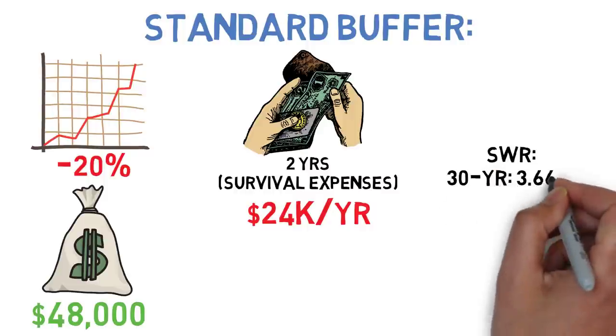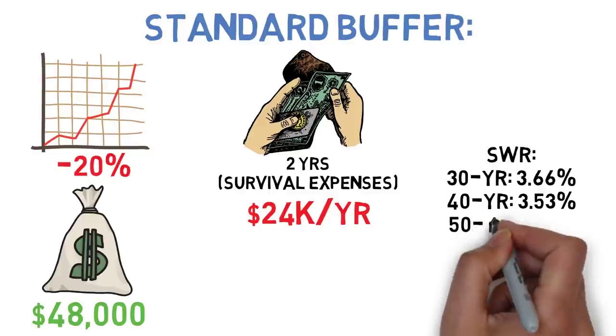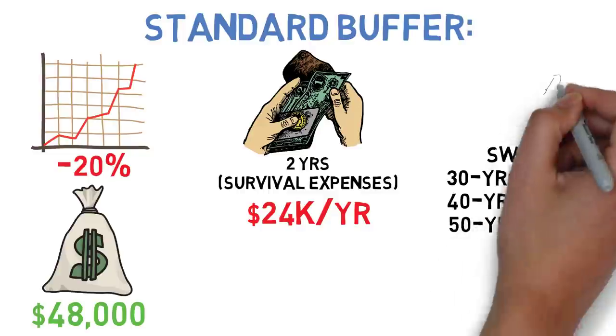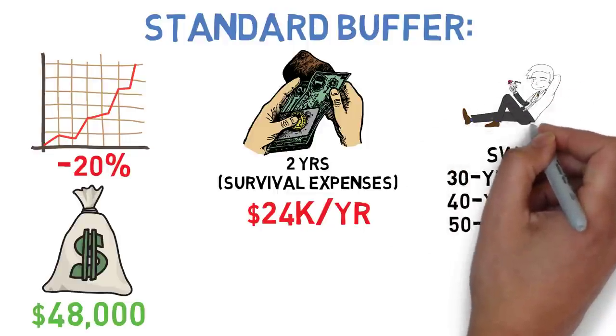In that case our minimum safe withdrawal rates for this strategy would come in at 3.66%, 3.53%, and 3.41% for the 30, 40, and 50 year drawdown scenarios respectively. As usual these rates are before things like expenses and taxes are calculated.